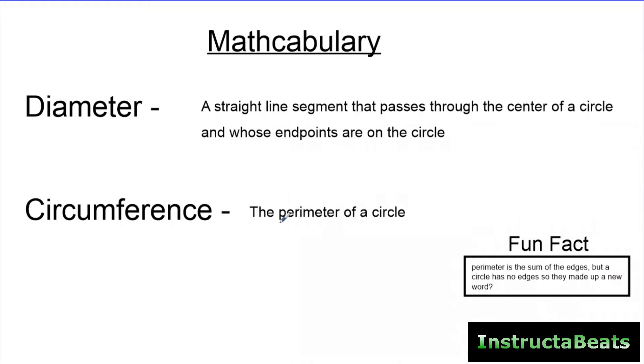And the circumference is the perimeter of the circle. Now, fun fact, perimeter is the sum of the edges, but because a circle has no edges, they couldn't use the word perimeter. You can't have the sum of the edges if there are no edges. So they came up with a new word called circumference. I don't know why they couldn't just call it the perimeter of a circle, but circumference is a cool sounding word.